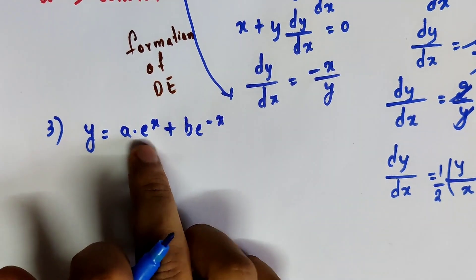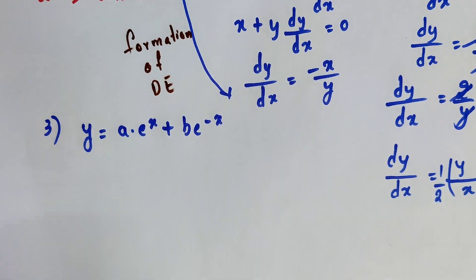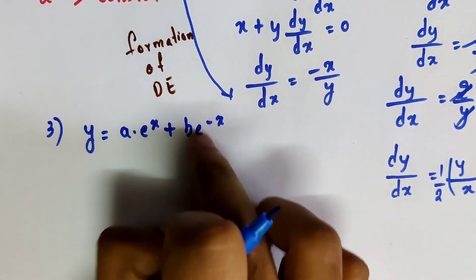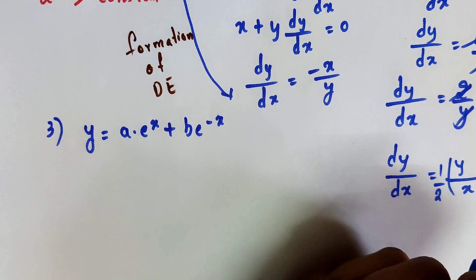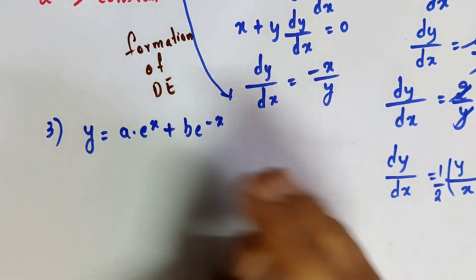Now I will take one more example where there are two constants: y equals a times e^x plus b times e^(-x). Here we have two constants, so we need to differentiate two times to eliminate both constants and form the differential equation.